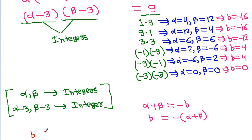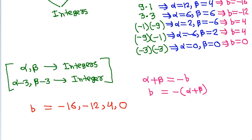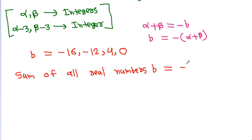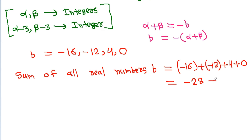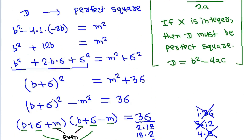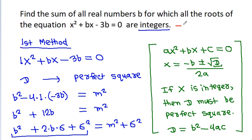So the distinct values of b are −16, −12, 4, and 0. The sum of all real numbers b equals −16−12+4+0=−28+4=−24.